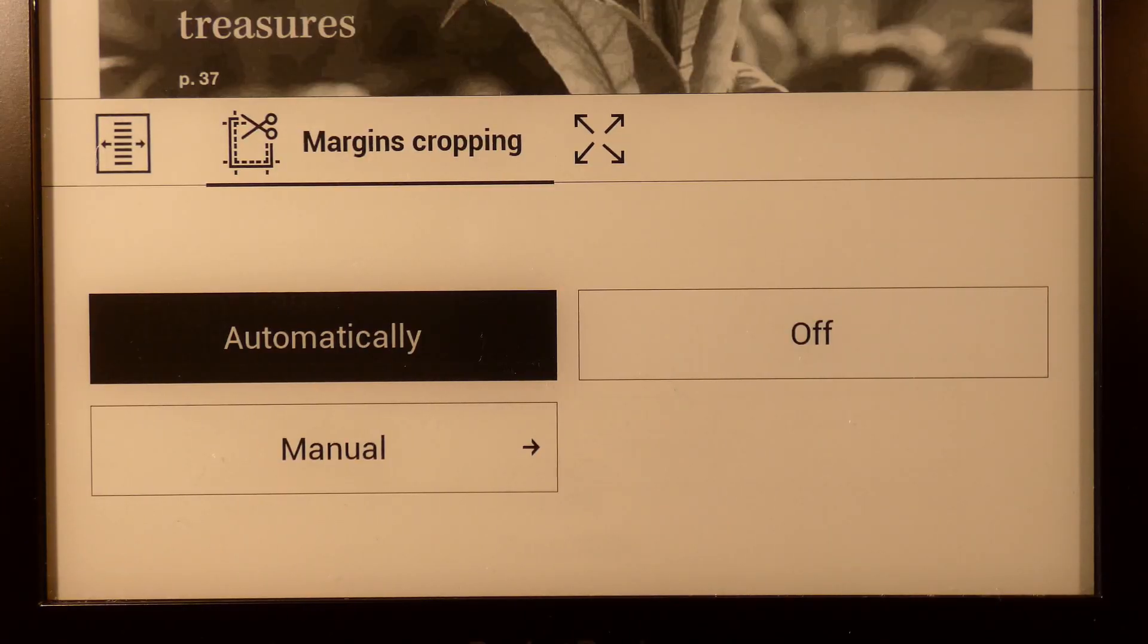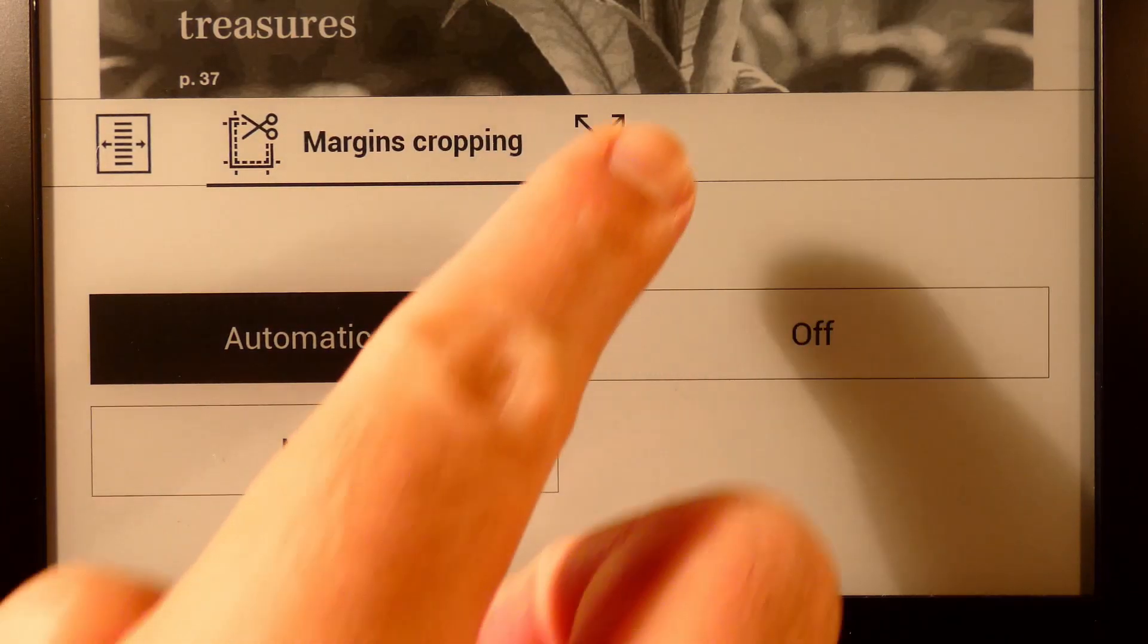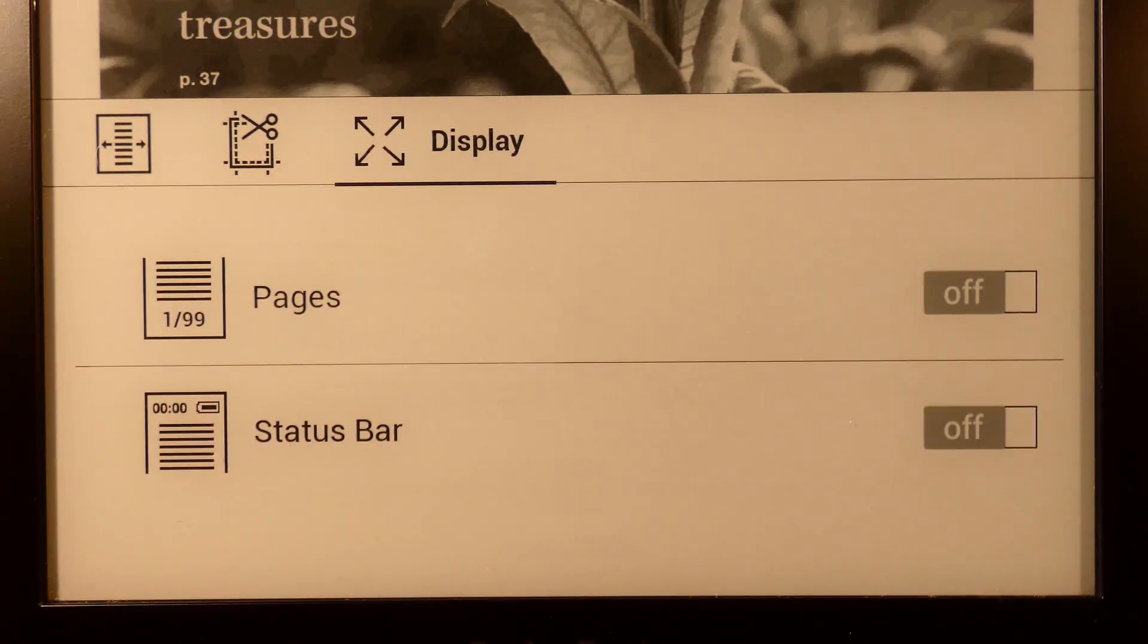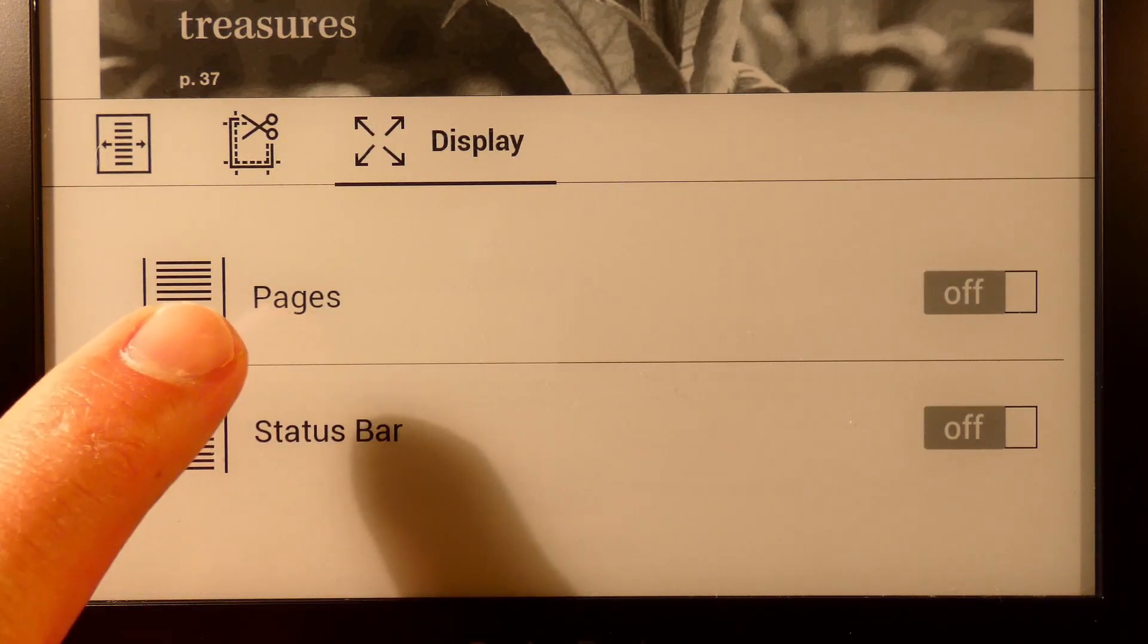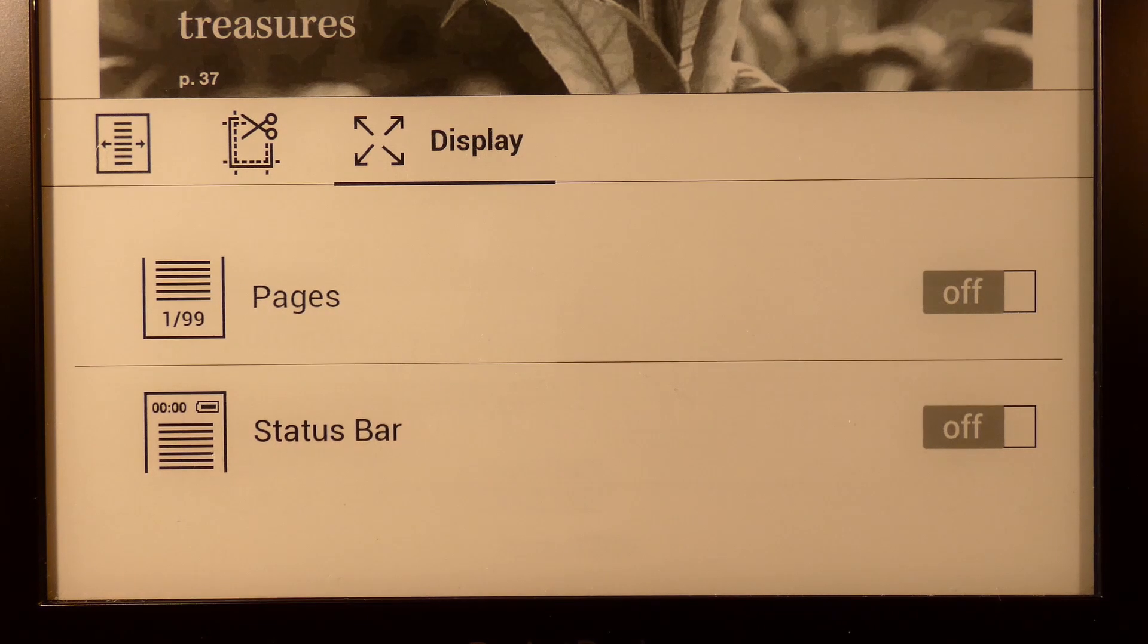The next icon you see to the right of the crop selection options is the somewhat oddly named display section. Options here are pretty sparse, and really all this allows you to do is to turn the device page number notifications and main device status bar on and off when you're in a PDF reading mode.